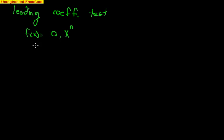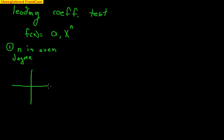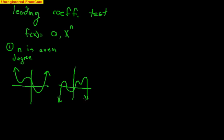That puts us into four cases. The first case: if n, the degree, is even, then both ends of the graph are going in the same direction — this is called end behavior. Both ends could be going up, or both ends could be going down. If the leading coefficient a sub 1 is positive, both ends are going up. If the leading coefficient is negative, both ends are going down.